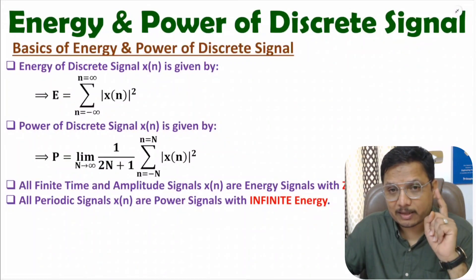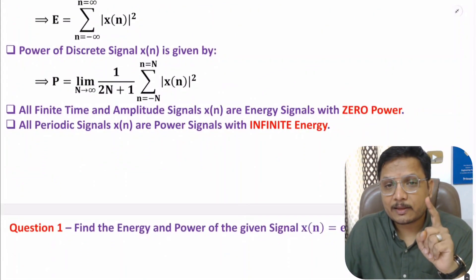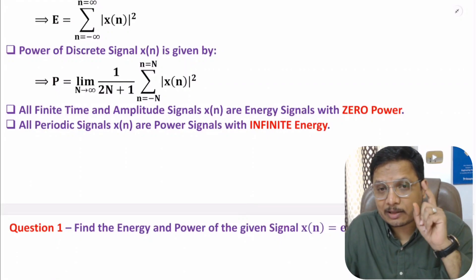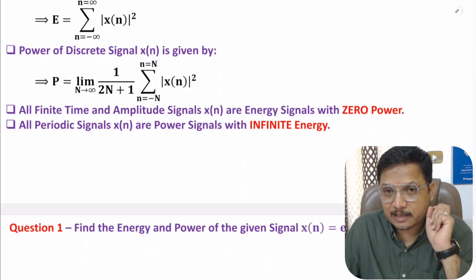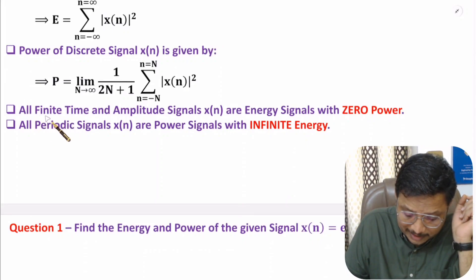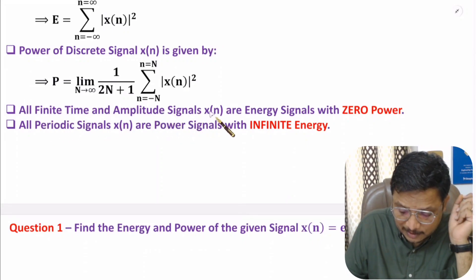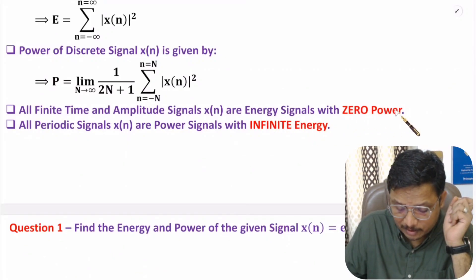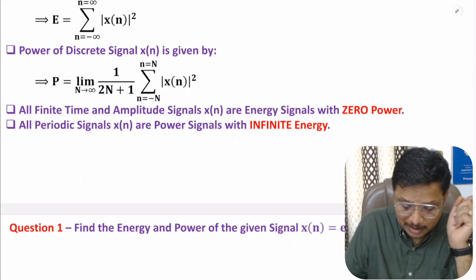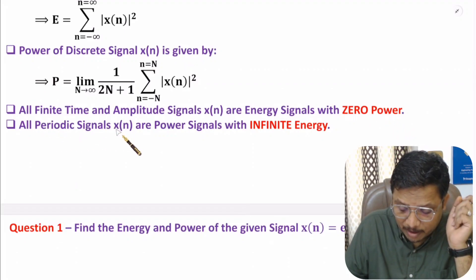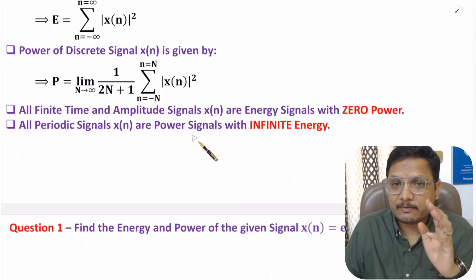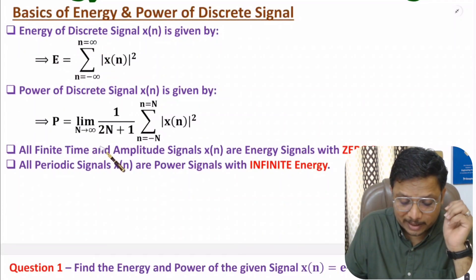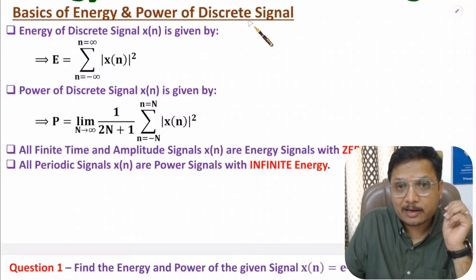Always remember: if you have a signal that has finite duration and finite amplitude, then those signals are energy signals. For all finite time and amplitude signals, energy is finite and power is zero. If you have a periodic signal, then that signal will be a power signal. For a power signal, energy will be infinite. These are the basics one should keep in mind to identify energy and power of discrete signals.